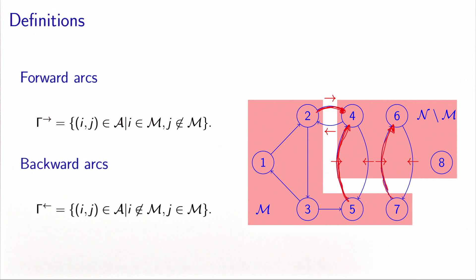the backward arcs, denoted by gamma and an arrow pointing to the left, are the arc (i,j), such that j is in M, and i is not in M. In our example, we have the arc (4,2), (4,5), and (6,7). So these arcs play the role of the bridges linking the two parts of the cut.